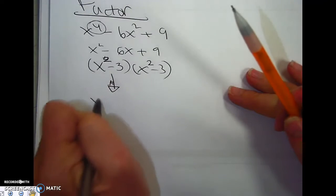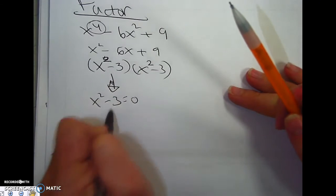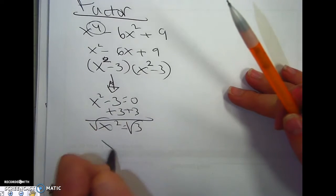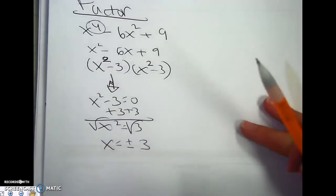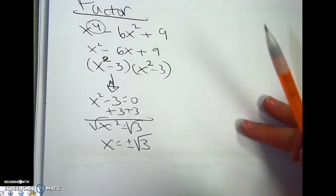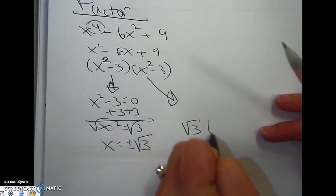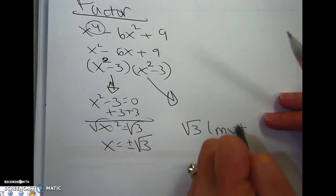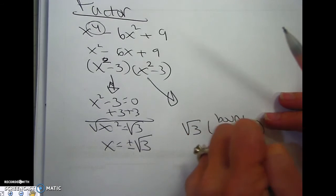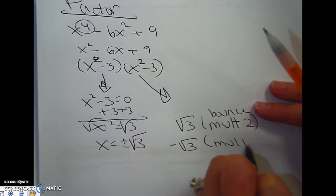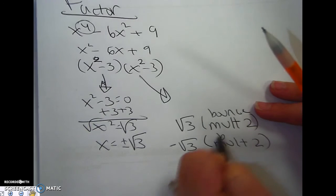If I set this equal to 0, I add 3, x squared equals 3. And I get the same thing here, which means I have rad 3 multiplicity 2, which means it's going to bounce. And I have negative rad 3, which is multiplicity 2, which also means it's going to bounce.